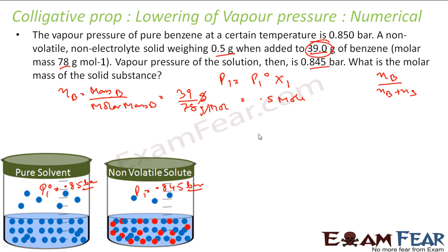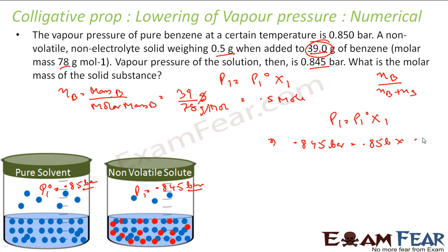We put these values into the equation P1 = P0 × x1. P1 is 0.845 bar, P0 is 0.85 bar, and x1 is moles of benzene (0.5) divided by moles of benzene (0.5) plus moles of solute. Bar and bar cancel, so 0.5 divided by (0.5 plus moles of solute) equals 0.845 divided by 0.85.